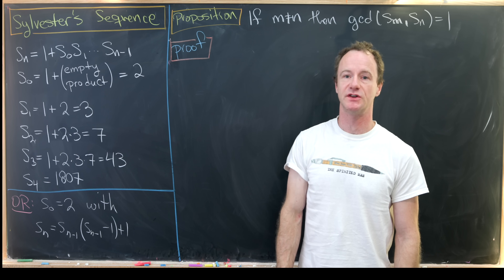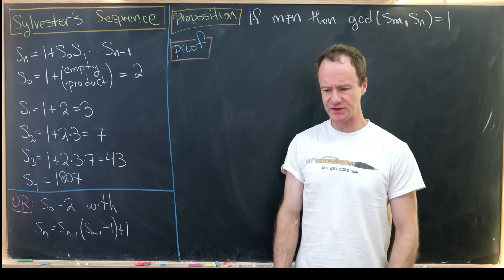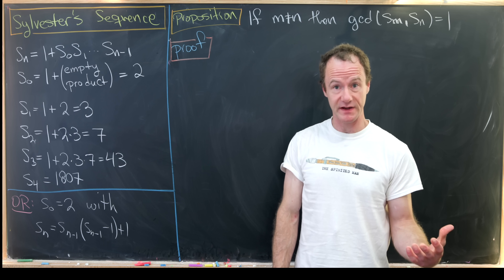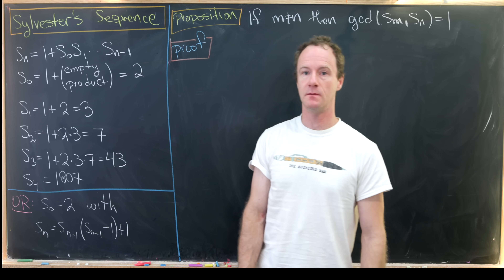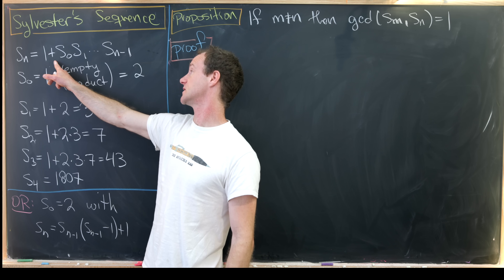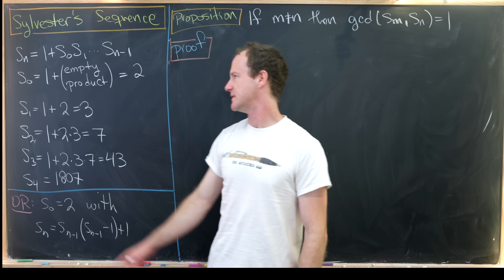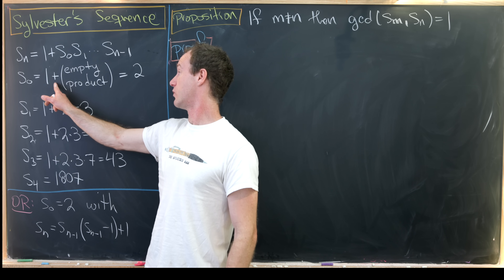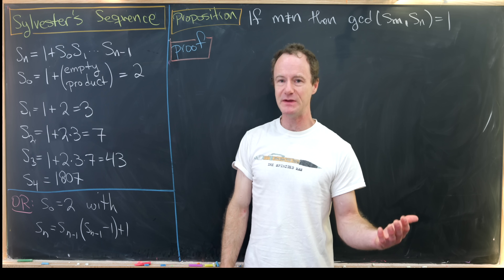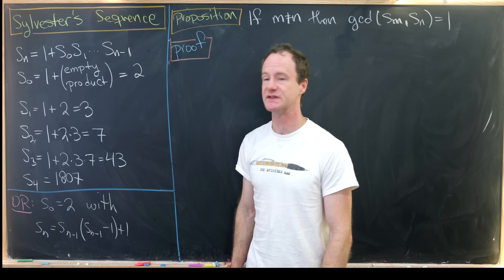Today we're going to look at an interesting integer sequence known as Sylvester's sequence. Sylvester's sequence is recursively defined by taking the product of the previous terms and then adding one. In symbols, S_n is one plus the product S₀ up to S_{n-1}. So S₀ will be one plus the empty product, and the empty product is standardly taken to be one, giving us one plus one which is two.